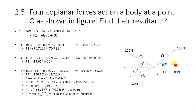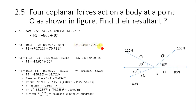Force F2 makes an angle of 45 degrees with the horizontal. Its x-component is 100 cos 45° = 70.711 newtons, and its y-component is 100 sin 45° = 70.711 newtons. So F2 = 70.711i + 70.711j.